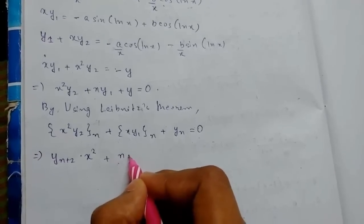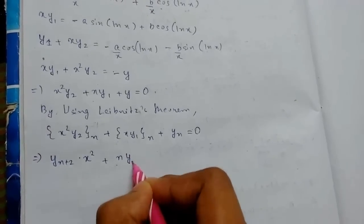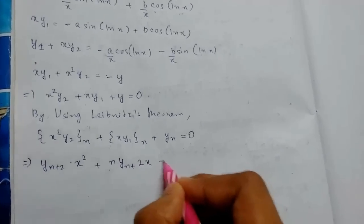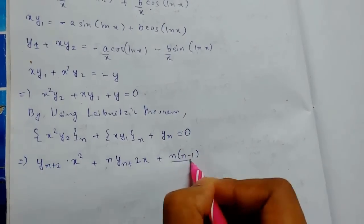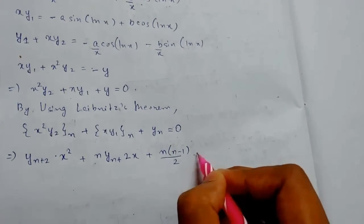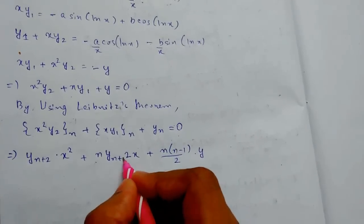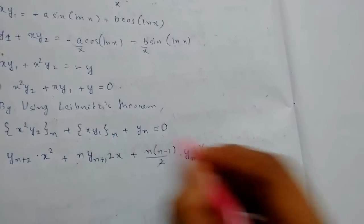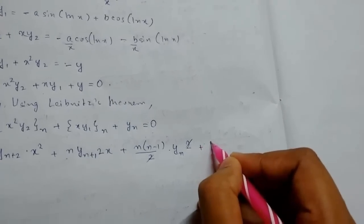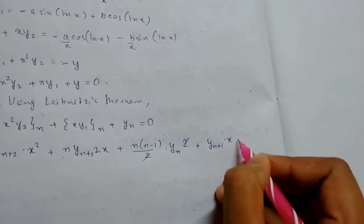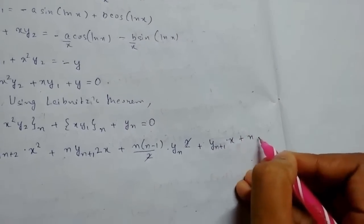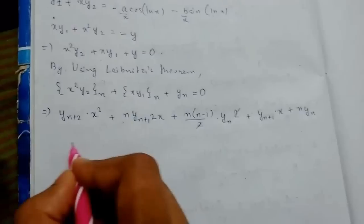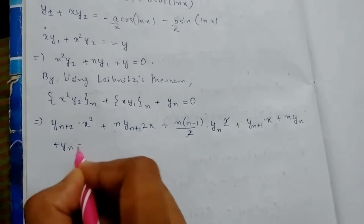Continuing the Leibniz expansion: nC₁·y_{n+1}·2x from differentiating x², then nC₂·y_n·2 (the 2s cancel with the denominator). For the x·y₁ term: y_{n+1}·x + nC₁·y_n·1. And for the y term, simply y_n. Setting everything equal to 0.